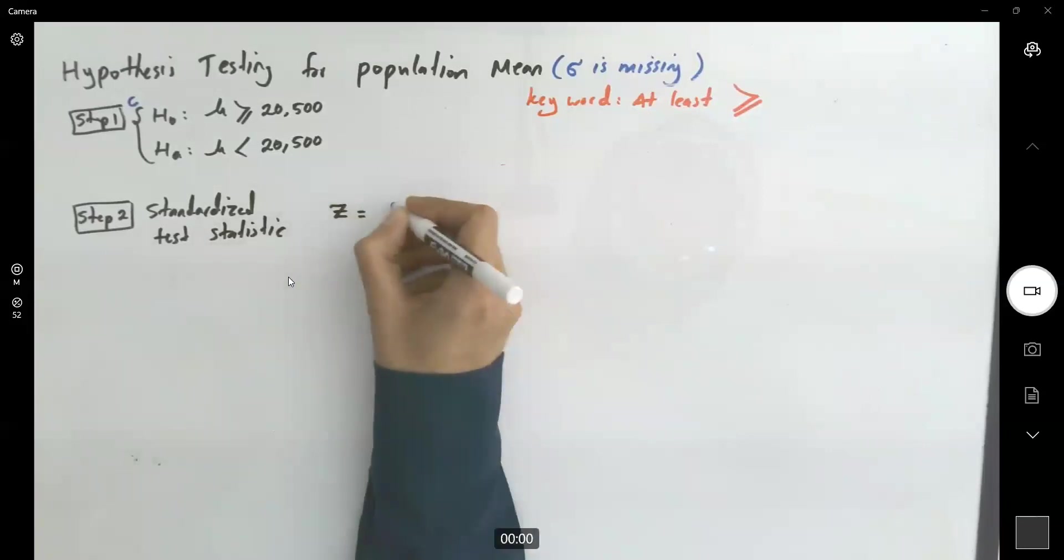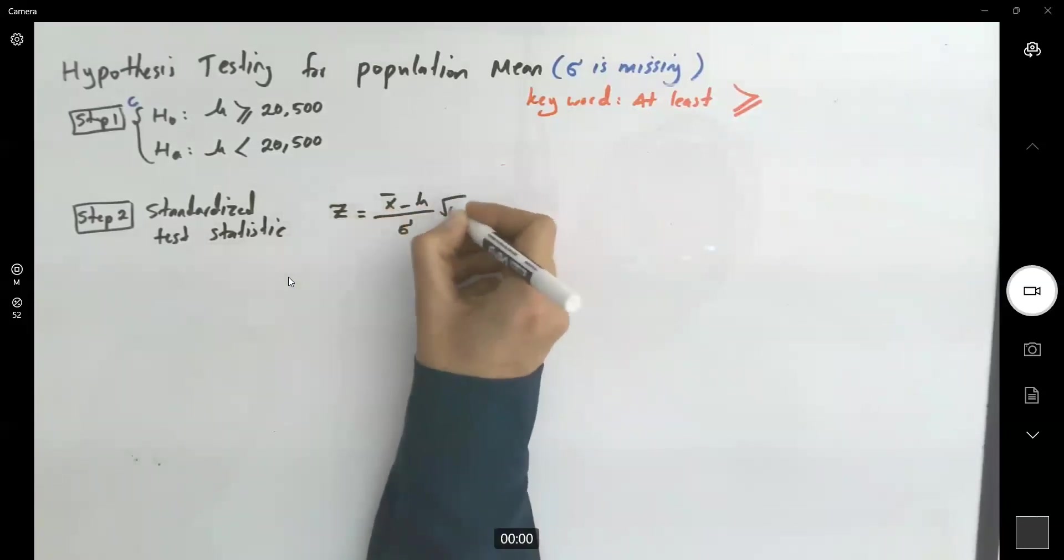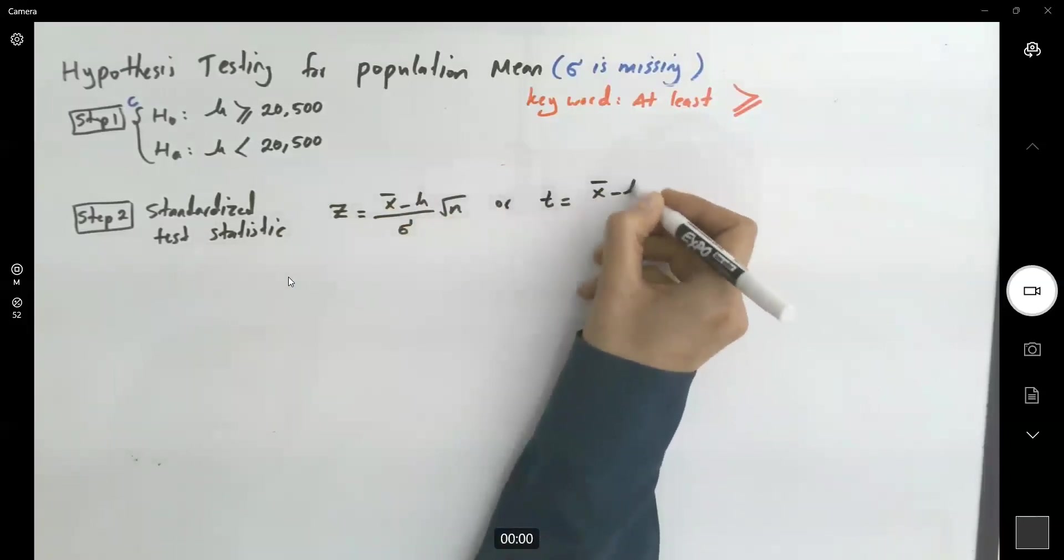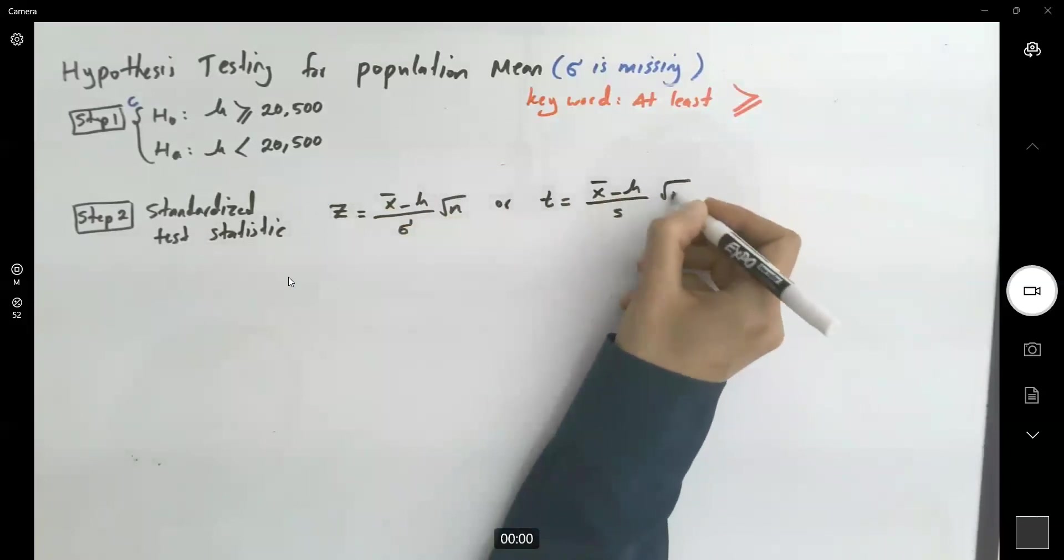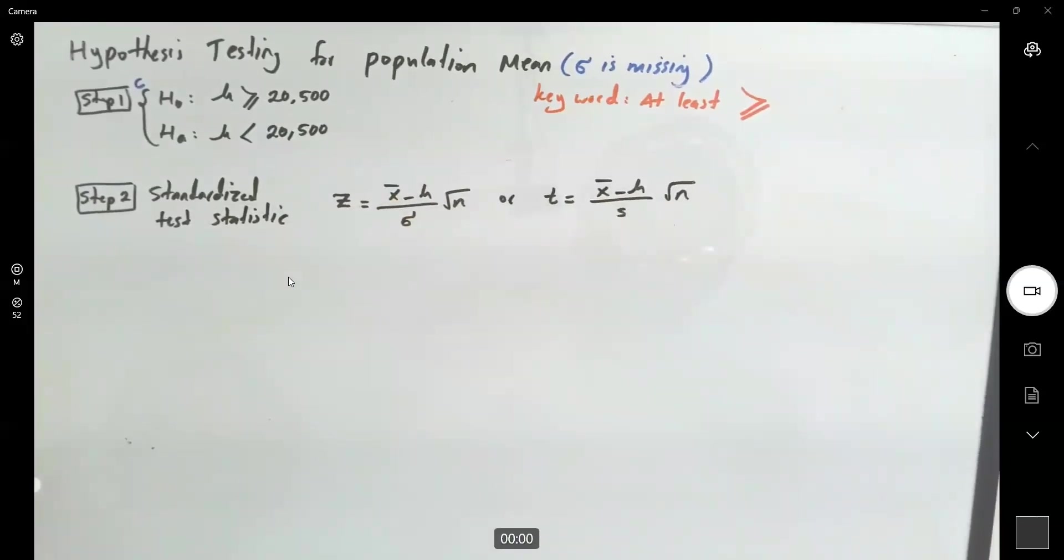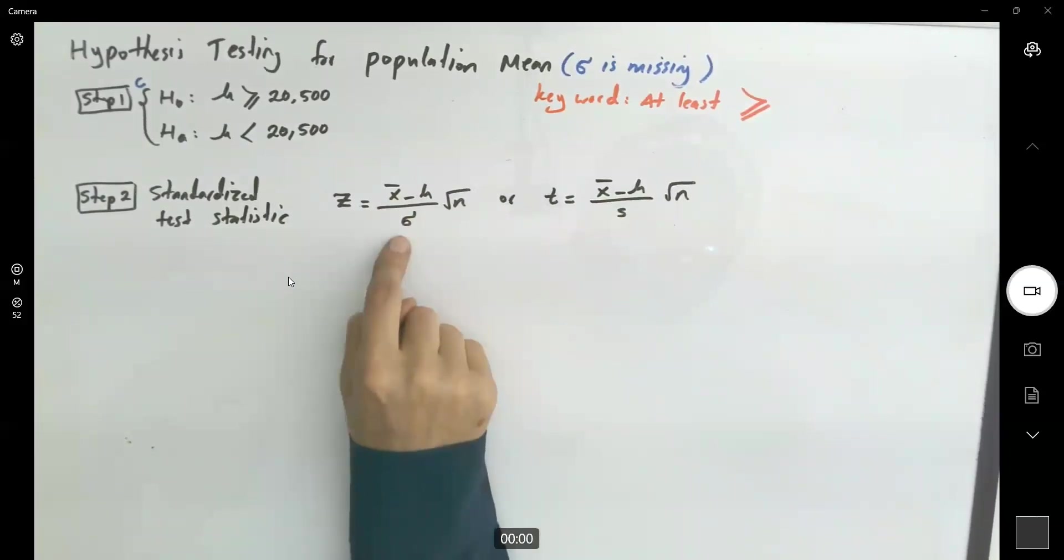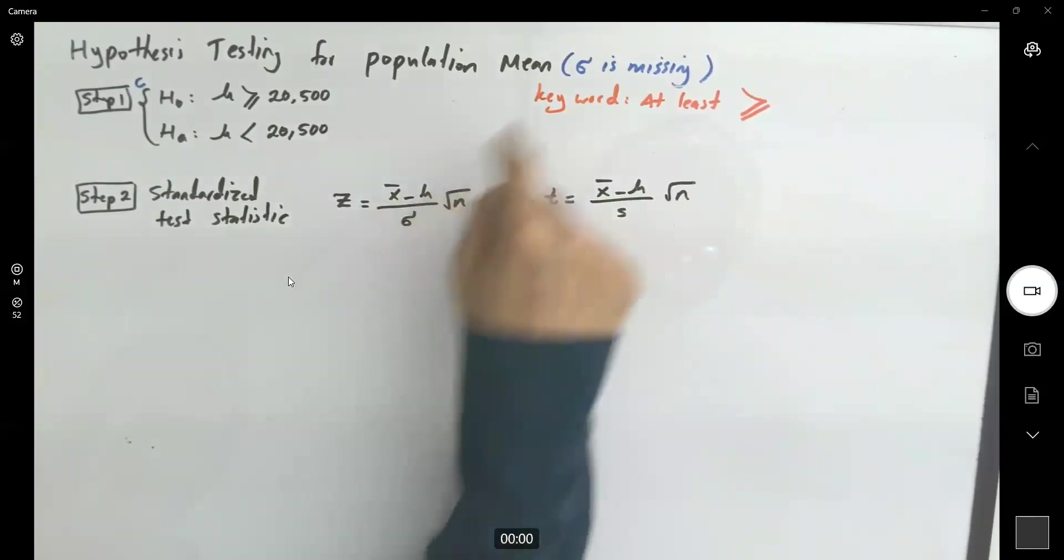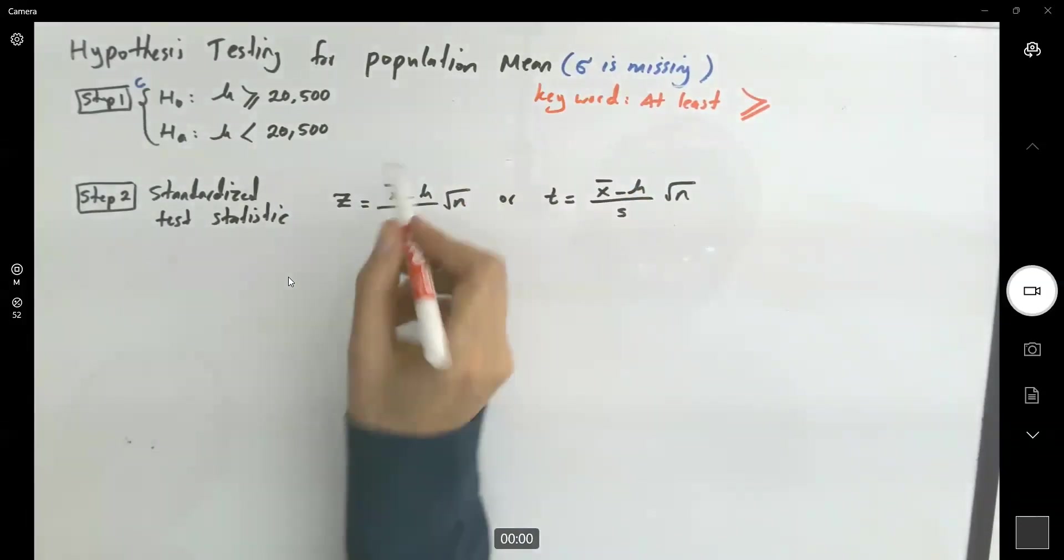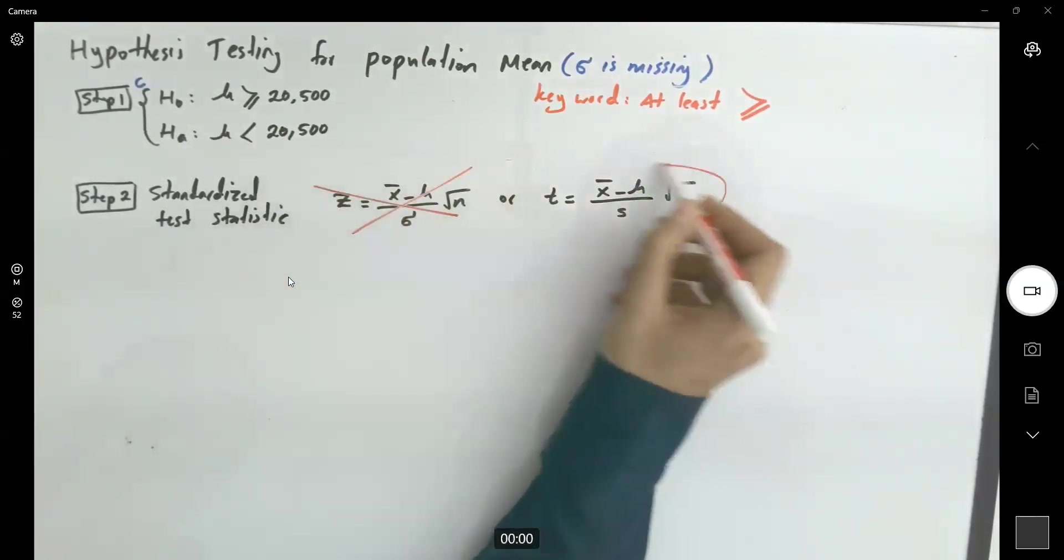Which one is it? Which case is the one that you're working with? Is it the z or is it the t? Remember that the question says, we don't have any information about the population standard deviation. This guy is missing. Sigma is missing.